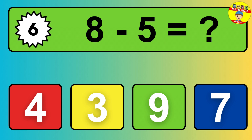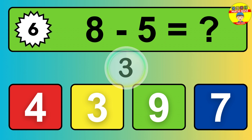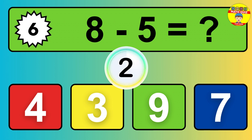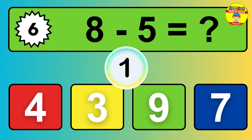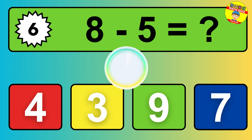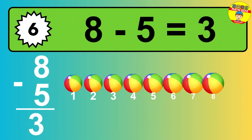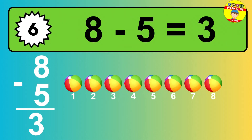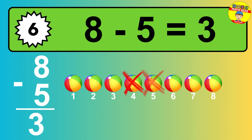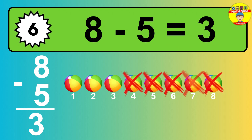Question 6: 8 minus 5 equals what? The answer is, 8 minus 5 is 3. Let's count it: 1, 2, 3.